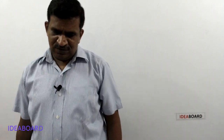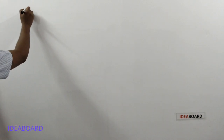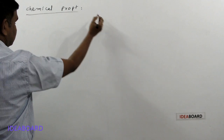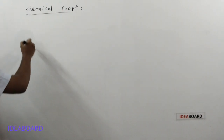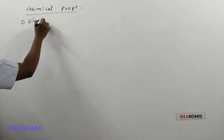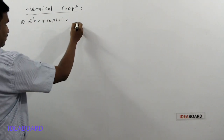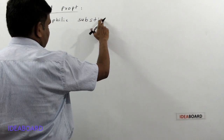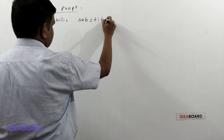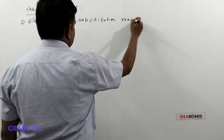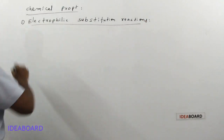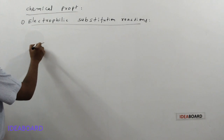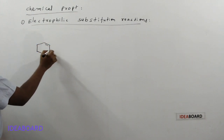Today I want to explain about the chemical properties of haloarynes or aryl halides. In these chemical properties, first we will go for the electrophilic substitution reactions, also called as electrophilic aromatic substitution reactions. Suppose any haloaryne is taken — for example, I am taking chlorobenzene here.